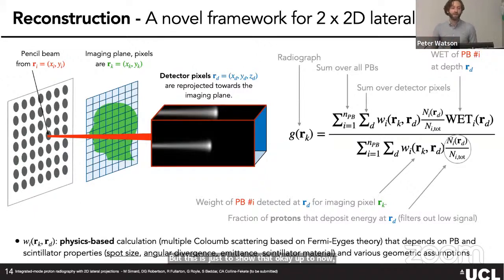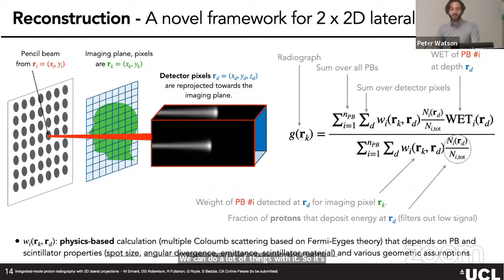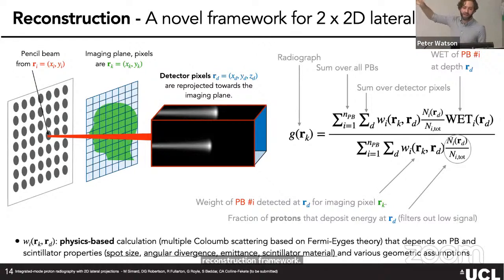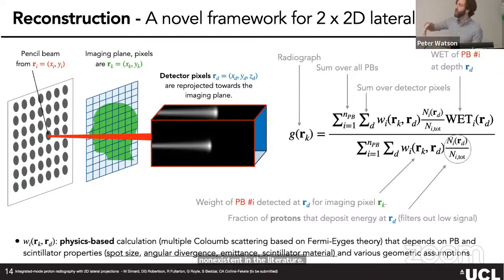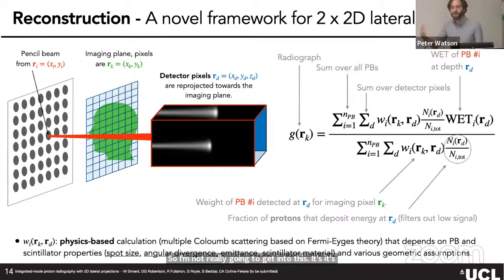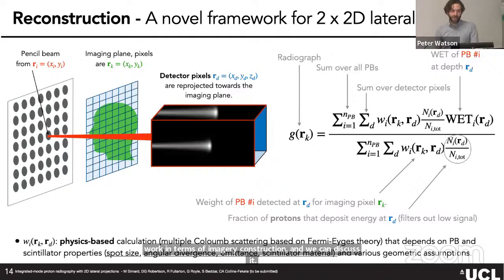Our device shows good quantitative accuracy and we're ready to do imaging. However, we needed an image reconstruction framework for our set of 2D lateral views from optical CCD camera images, which was essentially non-existent in the literature. We spent the last year developing one using those two sets of lateral views. We can discuss the proton physics details if anyone is interested.